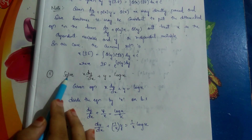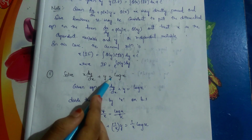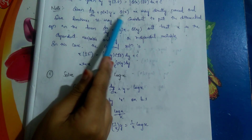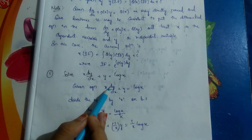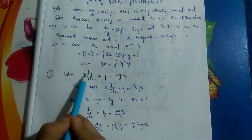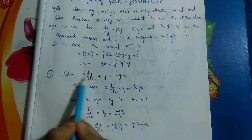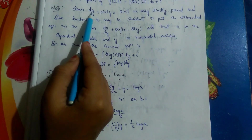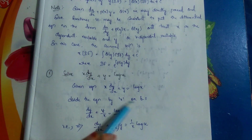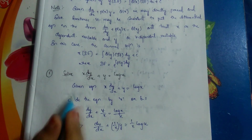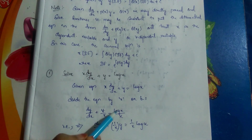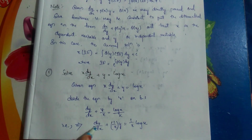First question: solve x·(dy/dx) + y = log x. We need to put this into the form dy/dx plus P(x)·y equals Q(x). The given equation is x·(dy/dx) + y = log x. To get the coefficient of dy/dx equal to 1, we divide the whole equation by x on both sides. So dy/dx plus y/x equals log x / x.